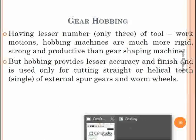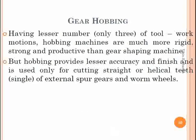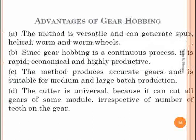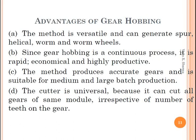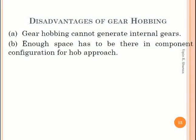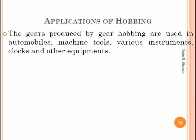Advantages of gear hobbing include: the method is versatile and can generate spur, helical, bevel, and worm wheels. Since gear hobbing is a continuous process, it is rapid, economical, and highly productive. The method produces accurate gears and is suitable for medium and large batch production. The cutter is universal because it can cut all gears of the same module irrespective of number of teeth. A disadvantage is that gear hobbing cannot generate internal gears, and the setup requires enough space for the machine components.